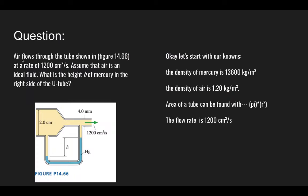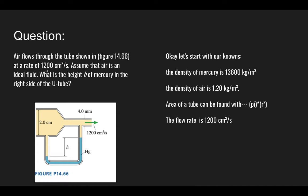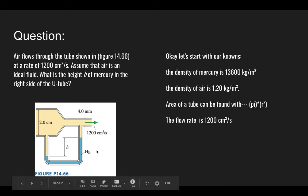So the question reads, air flows through a tube shown in figure 14.66. Here's the figure, and at a rate of 1,200 centimeters cubed per second, assume that air is an ideal fluid, and it's asking what is the height of mercury in the right side of the U-tube. So when we look at the figure, it gives us the information that we need to solve the problem. It gives us the diameter of the big pipe, the diameter of the small pipe, it gives us the flow rate, and it gives us the element which is mercury.